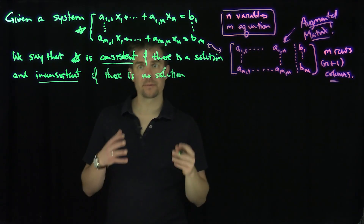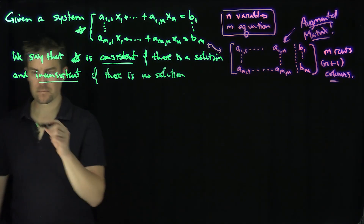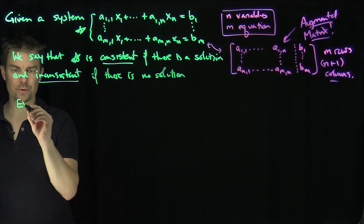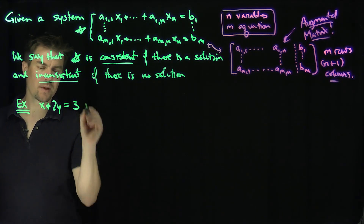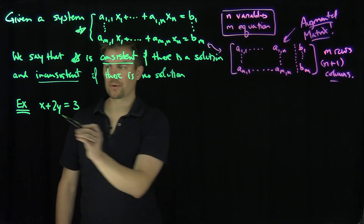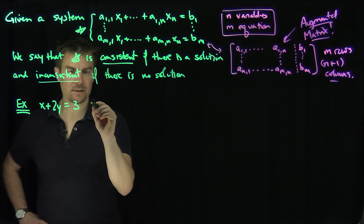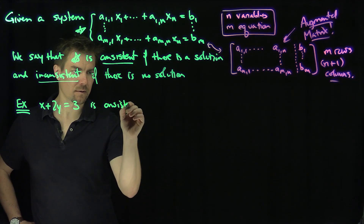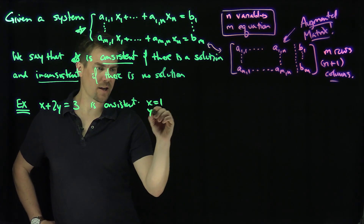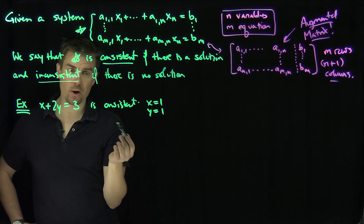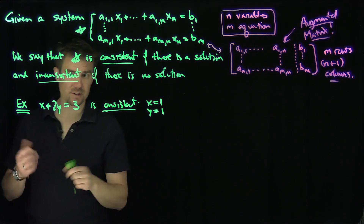Let's see examples of consistent and inconsistent systems. Here's a consistent example: the system x plus 2y equals three. That's two variables and one equation. This is consistent — I can choose x equals one and y equals one. If x equals one and y equals one, I have a solution to my equation, so the system is consistent.